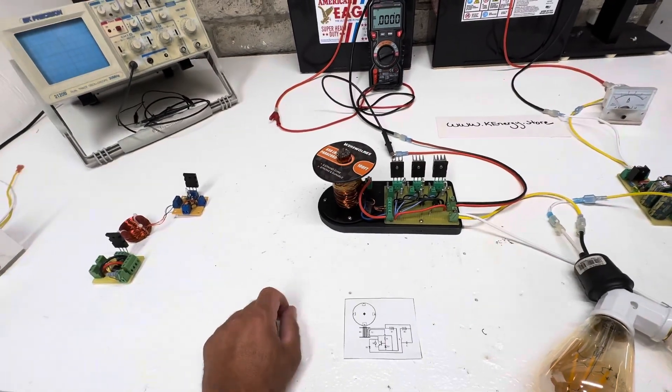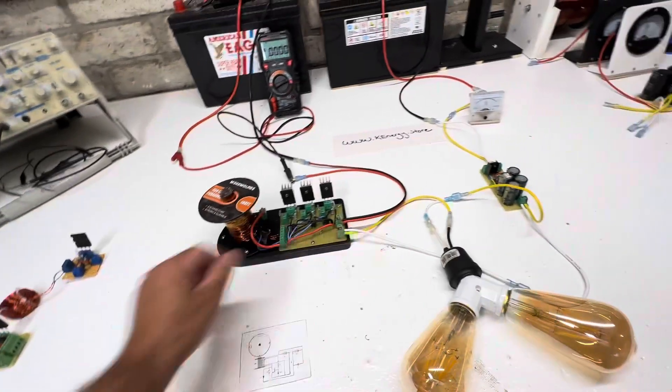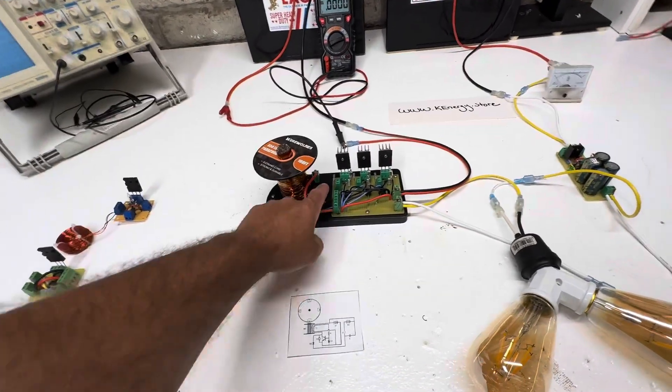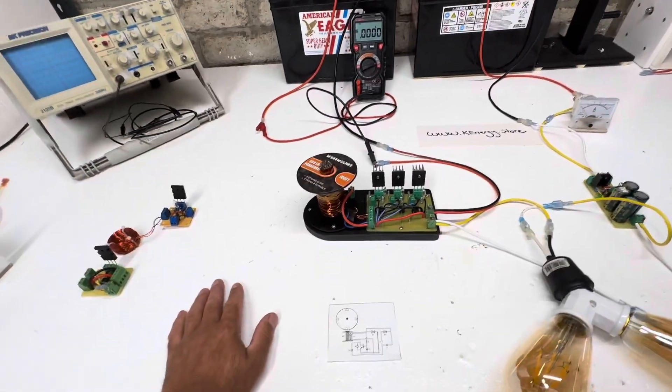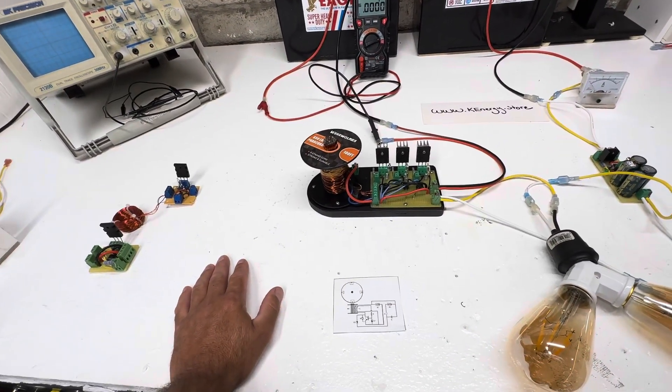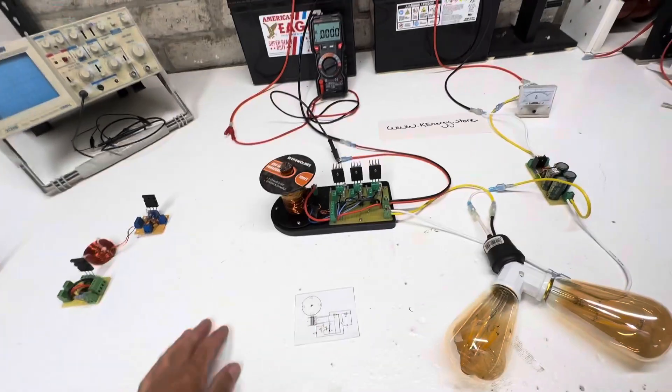So right now it's set up as an oscillator, but if you switch these two wires you could put a wheel on here and run it as a regular Bedini motor. So let me show how this is laid out.